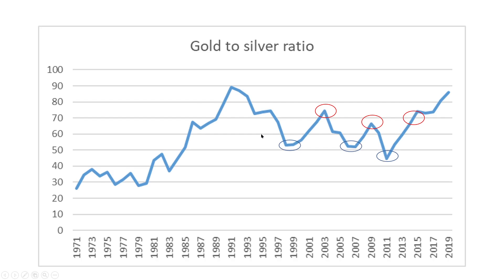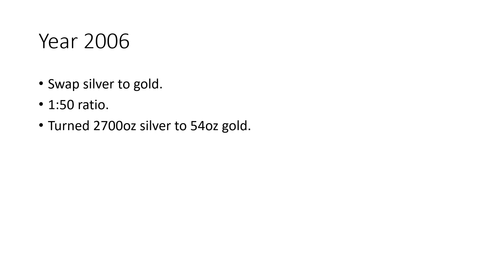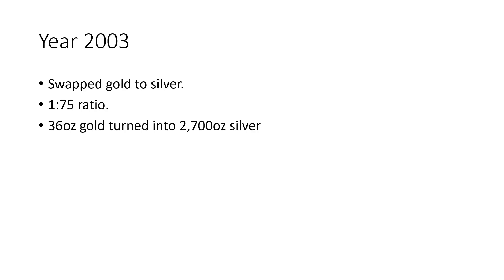The ratio is on the side of the chart. Anything under 50 is a gold swap; anything over 75 is a silver swap. In 2003, we swapped our gold to silver at a 1-to-75 ratio: 36 times 75 equals 2,700 ounces of silver. Next, in 2006, the ratio went down to 1-to-50, so we turned our 2,700 ounces divided by 50 into 54 ounces of gold — up from an original 36. We increased our gold holdings and our purchasing power.